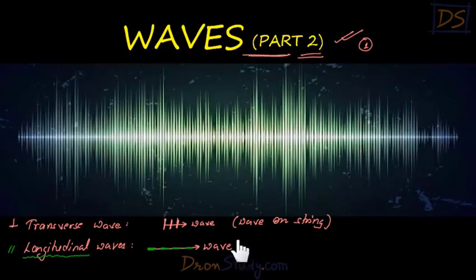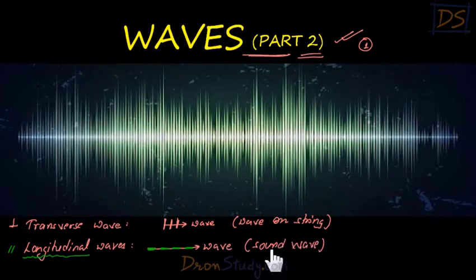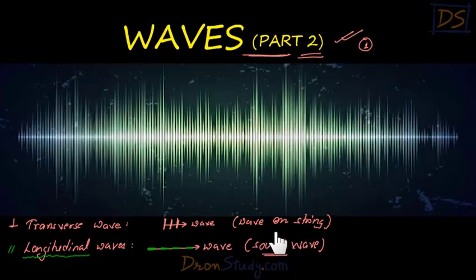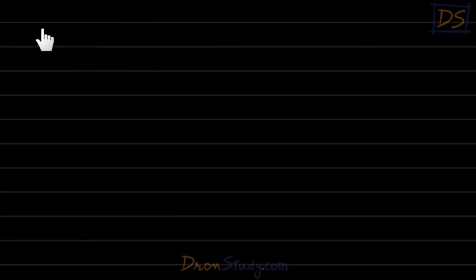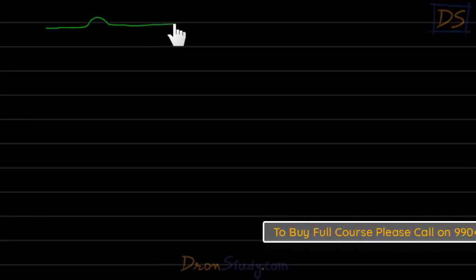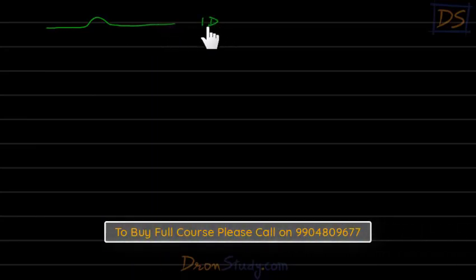Sound is the most common example of longitudinal waves, and in this chapter we will study sound waves. The string wave we studied in the last chapter is basically a one-dimensional wave, because it travels along a rope in a straight line — that is a one-dimensional wave.